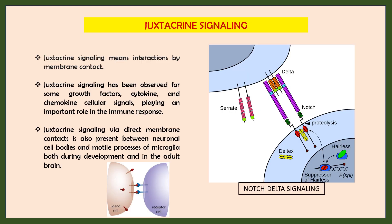The first type is juxtacrine signaling, which means interaction by membrane contact. It is a contact-dependent signaling — many extracellular signal molecules remain bound to the surface of the signaling cell and influence only cells that come in direct contact with it. This type of signaling requires physical contact between the cells and is important during development and in immune responses.